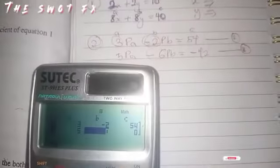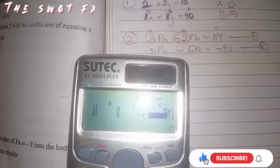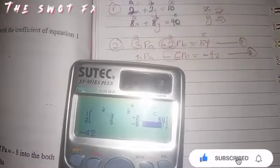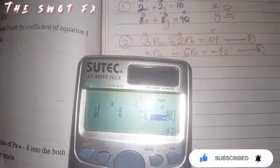The next one is minus 6. Press equals to. The next one is minus 42. Then you press equals to.